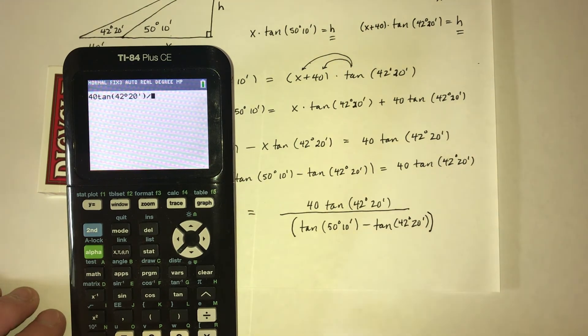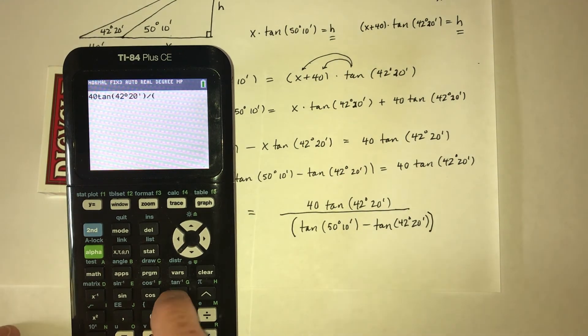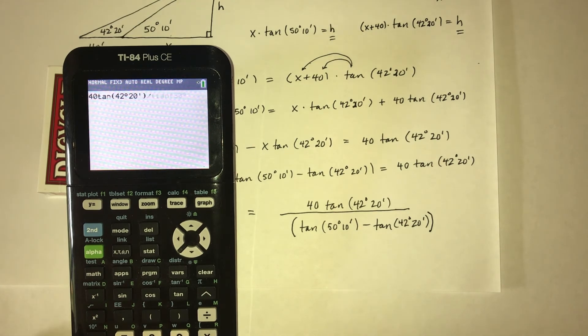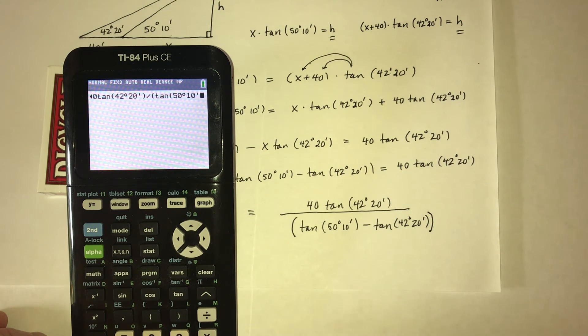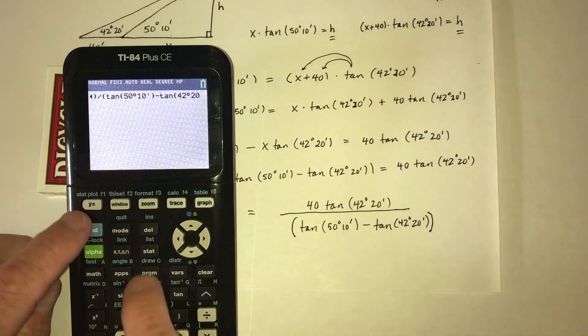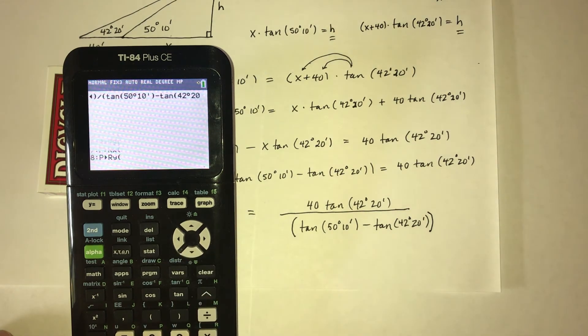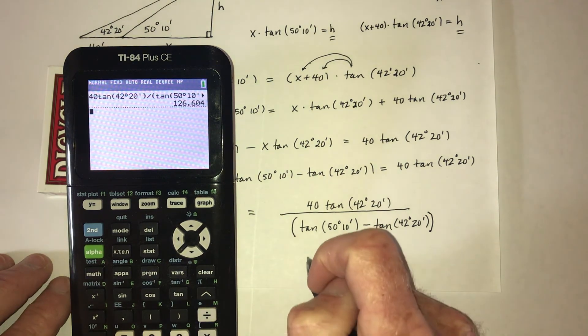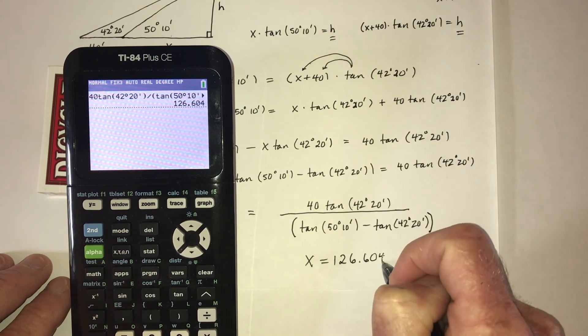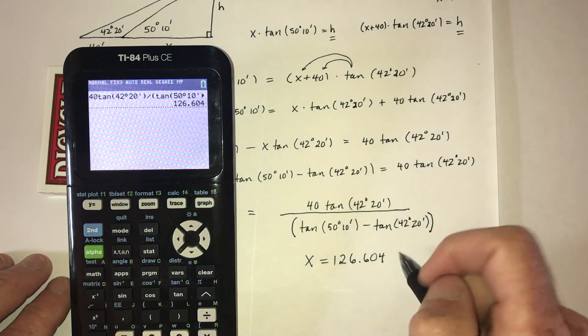Then there will be tangent of 50 second angle degrees, 10 second angle minutes. Now close that parenthesis right there, and then minus tangent 42, second angle degrees, 20, second angle minute. And then close that parenthesis, and close the last parenthesis. And it turns out that it's not that tall of a hill. It is 126.604, and the units are feet, it says in the problem.